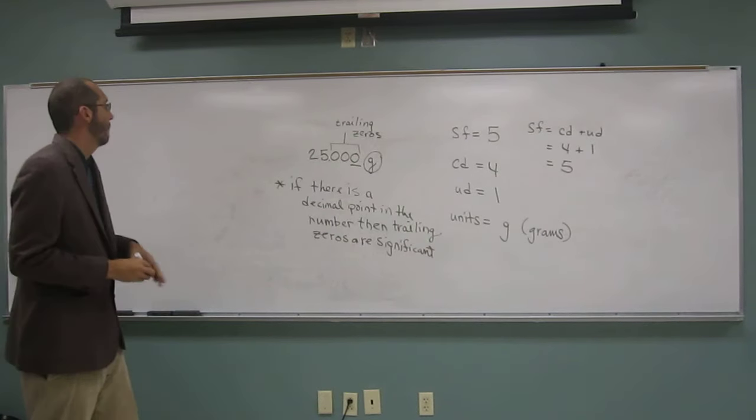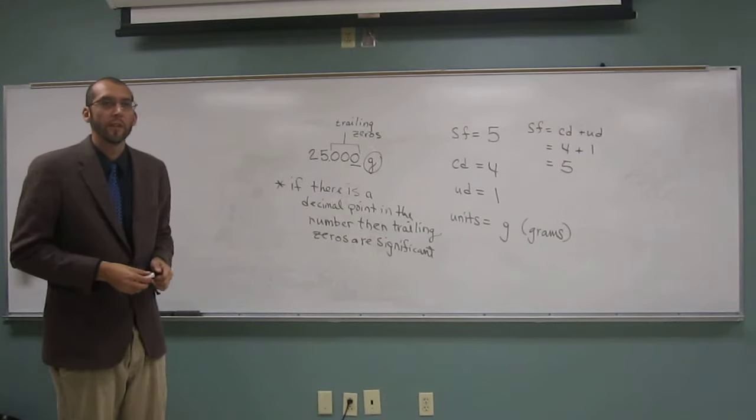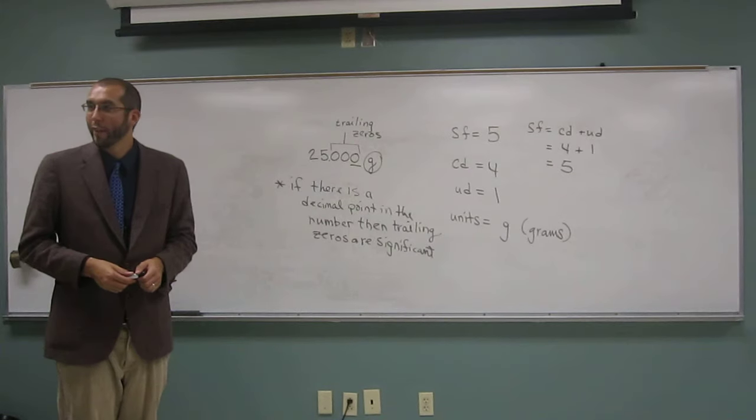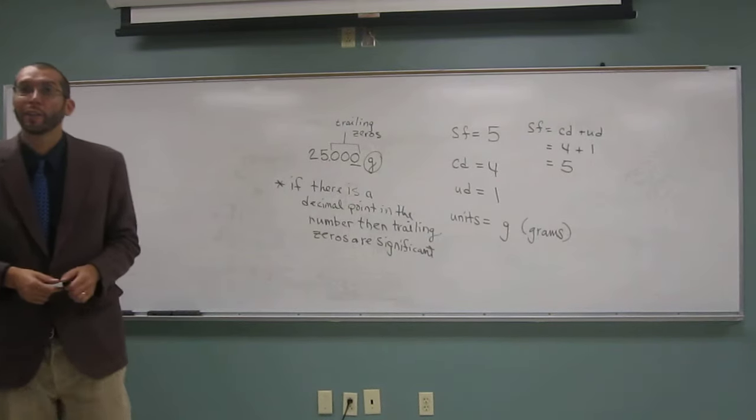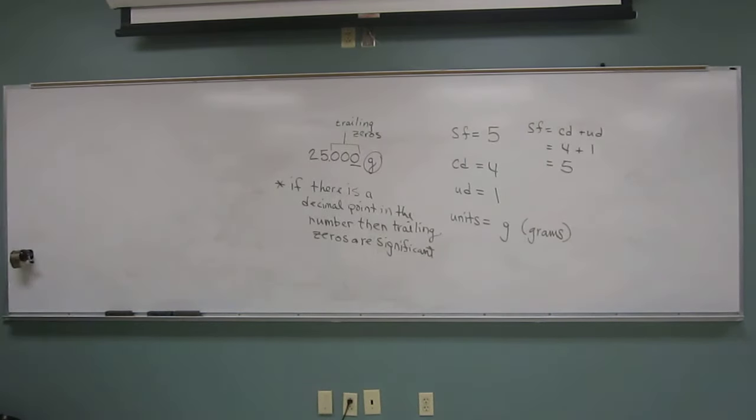So what does that mean? If there's no decimal, then what are your trailing zeros? Insignificant. Insignificant. Okay, so they're insignificant if there's no decimal. Any questions on this one? No. Okay, can we kill it?